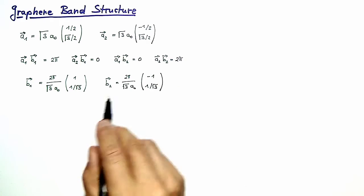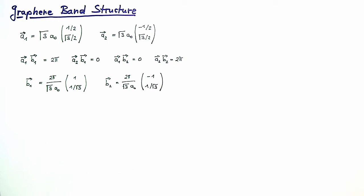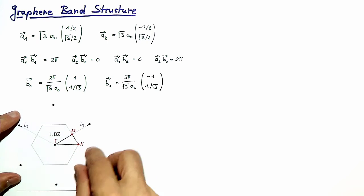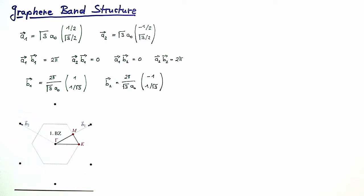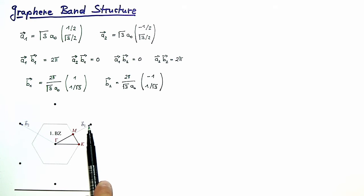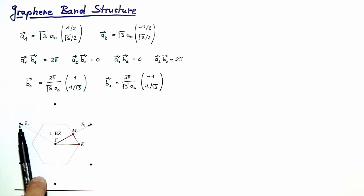The y-components of the two vectors are the same while the x-components differ by sign. Given these two vectors, the reciprocal lattice is obtained by forming linear combinations. In a sketch you can see vectors b1 and b2 starting from the gamma point — the origin of k-space — with b1 drawn here and b2 drawn there.